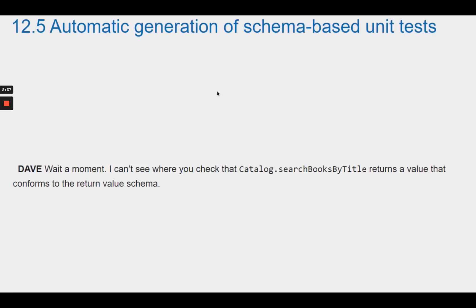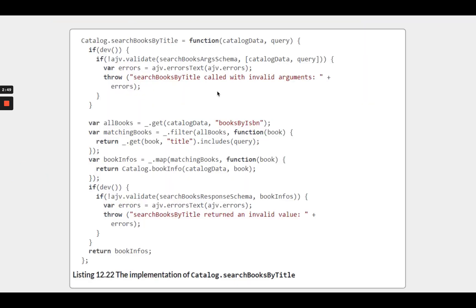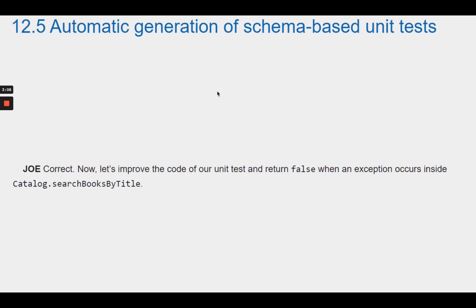Dave asks where the check that catalog.searchBooksByTitle returns a value conforming to the return value schema is. Theo points out it's in the code. Dave realizes it's inside catalog.searchBooksByTitle itself: if the return value doesn't conform to the schema, it throws an exception and the test fails. Joe confirms this is correct, and says now let's improve the unit test to return false when an exception occurs inside catalog.searchBooksByTitle.